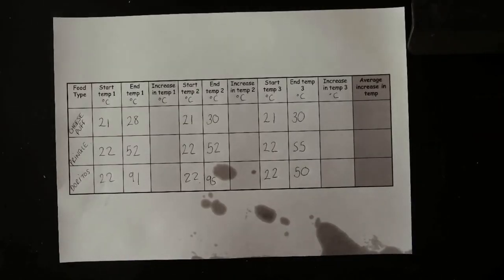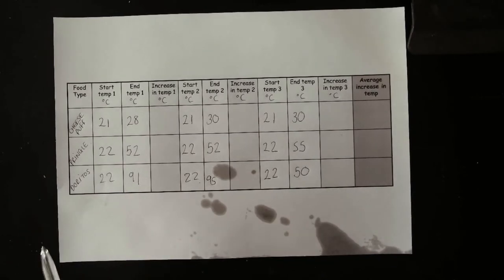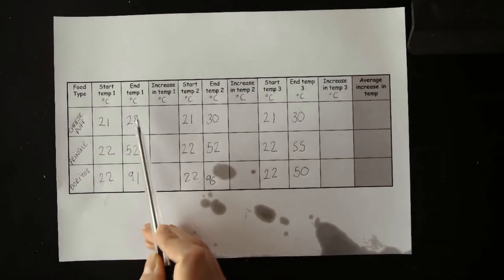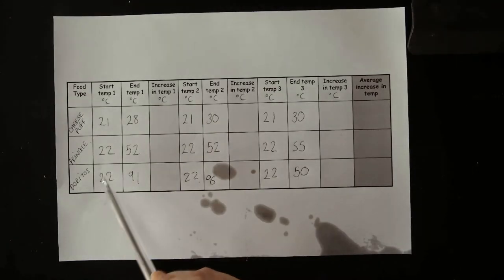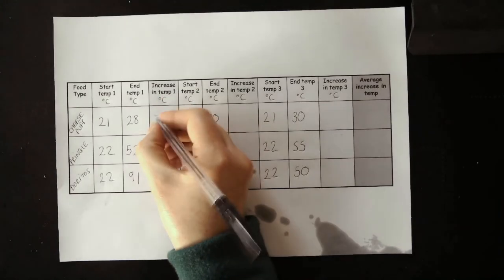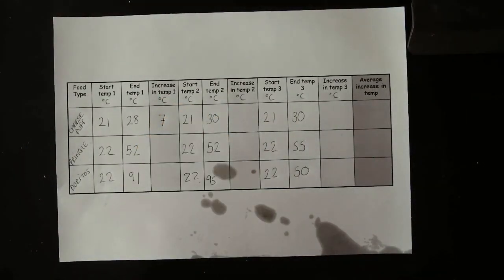Here I have my completed results table. It got a bit wet, but that's what happens when you're doing an experiment. So I've got a start temp and an end temperature, and what I need to work out is the increase. So from 21 to 28, what is the increase, and that is 7. So it's increased by 7 degrees.